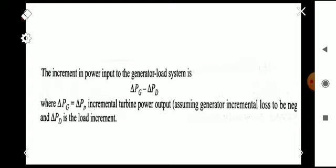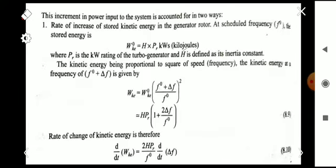The increment in power input to the system is accounted for in two ways. The first one is the rate of increase of stored kinetic energy in the generator rotor. At scheduled frequency f0, the stored energy is Wk0 = H × PR kilojoules, where PR is the kilowatt rating of the turbo-generator and H is defined as the inertia constant.